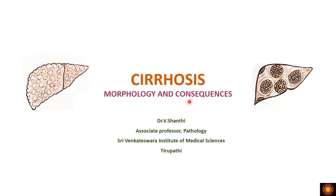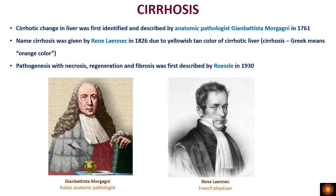This cirrhotic change in the liver was first described by Morgagni, an Italian anatomic pathologist. He conducted hundreds of autopsies and observed cirrhotic changes in the liver — the liver was fibrotic, smaller in size, and had a nodular surface. He described these changes but did not give the term cirrhosis.